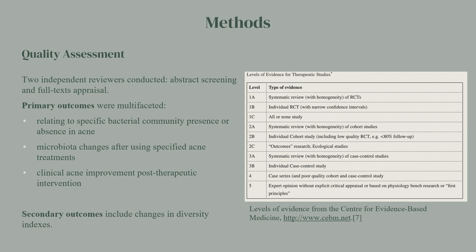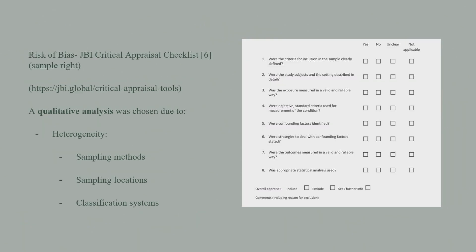Secondary outcomes were changes in diversity index — alpha and beta, as I mentioned. We used the JBI critical appraisal checklist, shown here as an example, to assess risk of bias and ensure all selected studies were of high quality. We ended up doing a qualitative analysis, which is not preferred in a systematic review — we would have preferred a quantitative analysis with more concrete statistical results. The reason we chose a qualitative analysis was due to significant heterogeneity among the studies regarding sample selection methods, sample selection locations, and different classification systems used, such as genus versus species per bacteria.